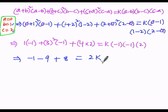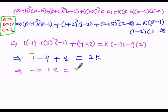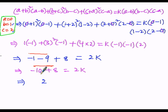Simplifying further: −1 − 9 = −10, then −10 + 8 = −2. Since 10 is greater, the sign is negative: −10 + 8 = −2. Therefore −2 = 2k.